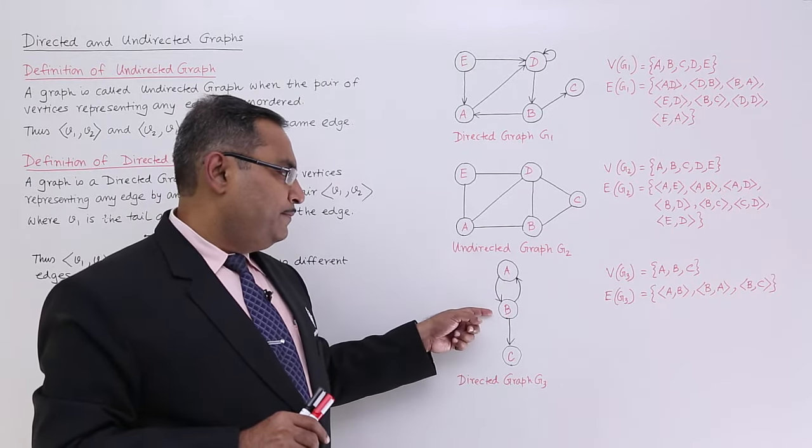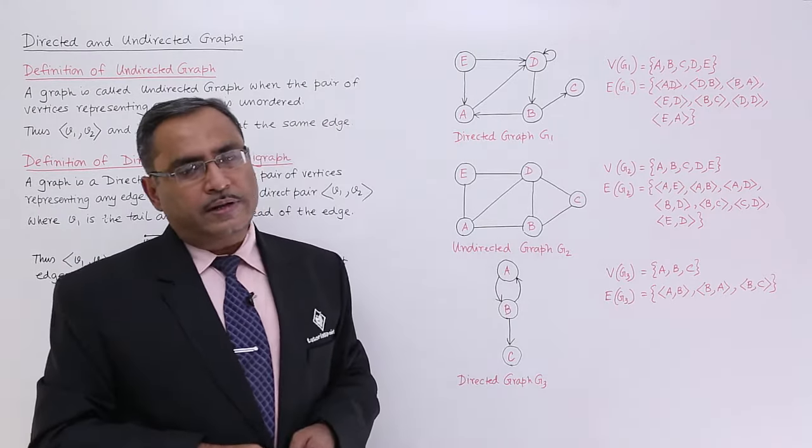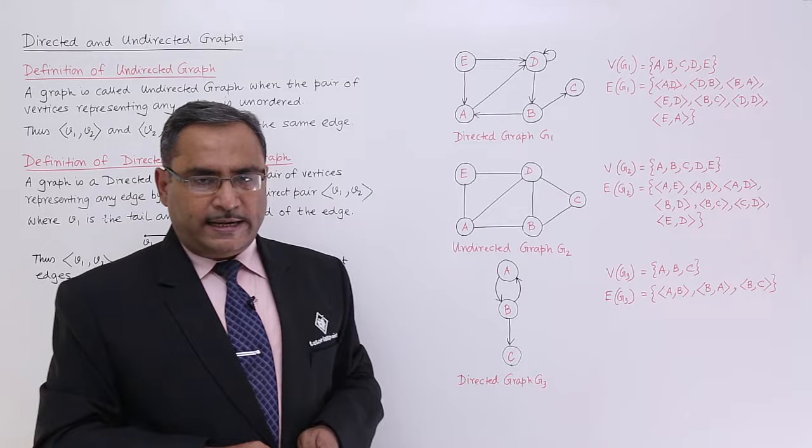So they are nothing but AB, BA, and BC. So they have been written within the curly braces to denote them as set members.